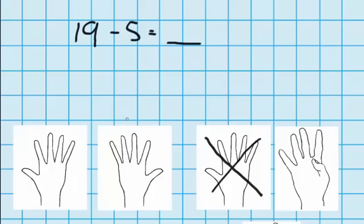So now the only fingers left up are these 10 and these 4. So you can see I've got 14 fingers left. So 19 minus 5 equals 14.